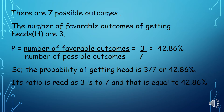So probability is equal to number of favorable outcomes over number of possible outcomes. That is equal to 3 over 7, which equals 42 and 86 hundredths percent. So the probability of getting heads is 3 over 7 or 42 and 86 hundredths percent. Its ratio is read as 3 is to 7 and that is equal to 42 and 86 hundredths percent.